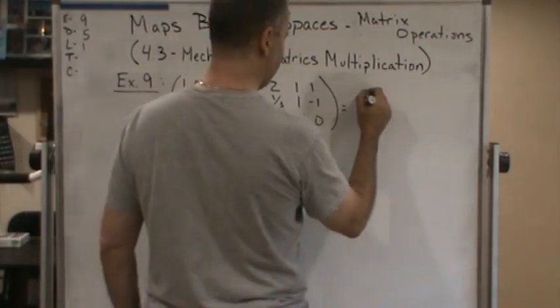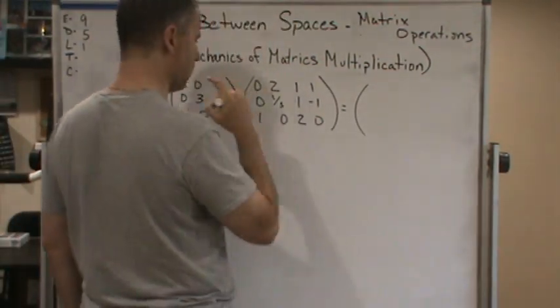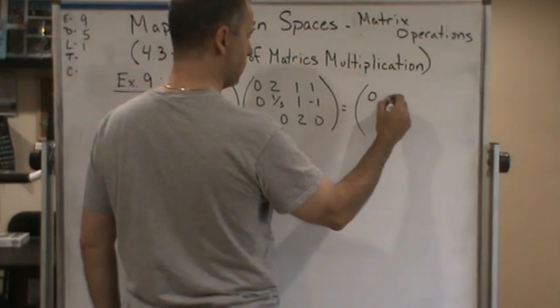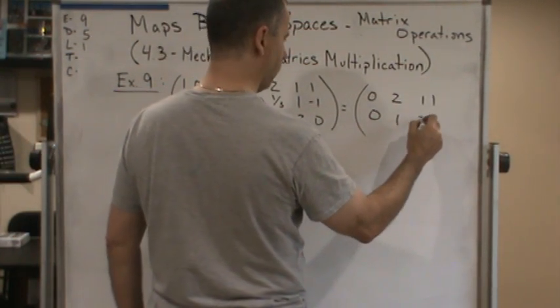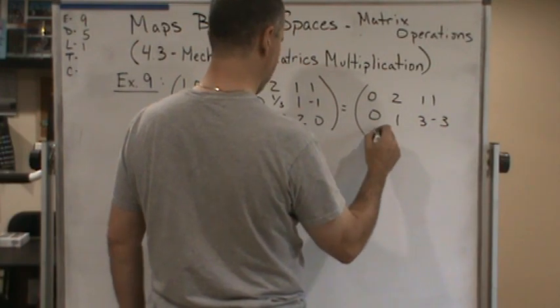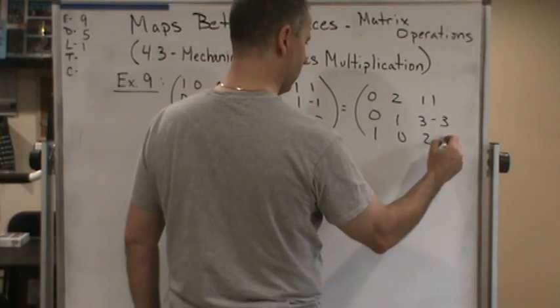So your resulting product is going to be 0, 2, 1, 1, 0, 1, 3, negative 3, 1, 0, 2, 0.